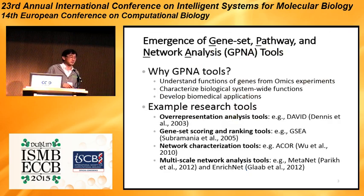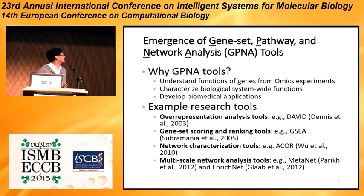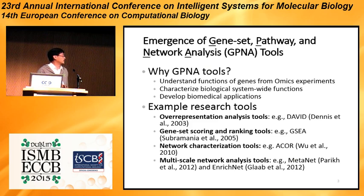This seems to be a wonderful world. There are lots of analysis tools — many of them developed by people in the audience — and I will call them the gene set pathway network analysis, or GPNA, tools. These tools allow us to characterize functions of the genes, understand biological systems, and develop biomedical applications. Examples include over-representation analysis tools such as David, gene set scoring and ranking tools such as GSEA, network characterization tools, and something that we developed.